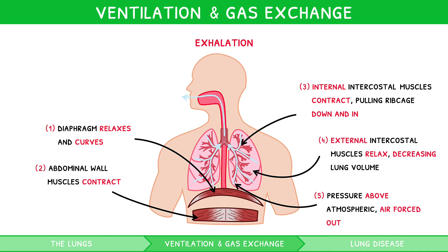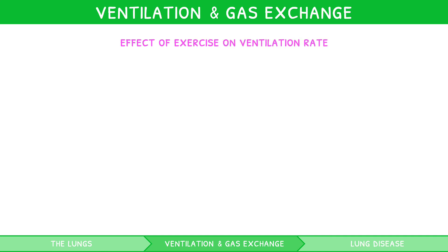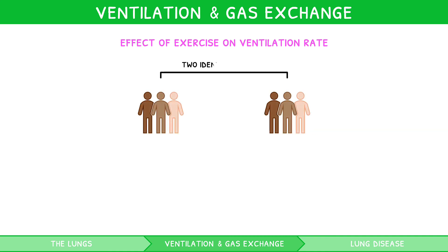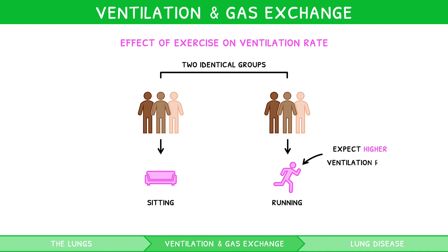A particular experiment investigating ventilation that the IB expects you to be comfortable with is the effect of exercise on ventilation rate. This will be explored in greater depth in our exam practical video series, but as a brief overview, two identical groups are given two activities — sitting and running — and their ventilation rates are measured before and after. One would expect a higher ventilation rate in the running group. Ensure you take time to memorise the descriptions of inhalation and exhalation, as well as familiarise yourself with this practical, as they are common exam questions.